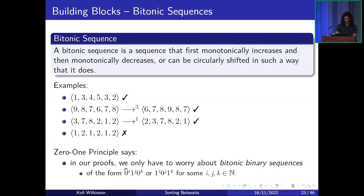The zero-one principle tells us that in our proofs we only need to worry about bitonic binary sequences, and these take the form of: some zeros, followed by some ones, followed by some zeros; or some ones, followed by some zeros, followed by some ones.